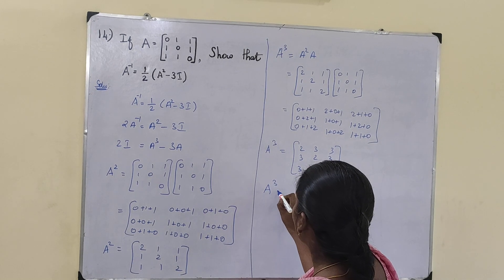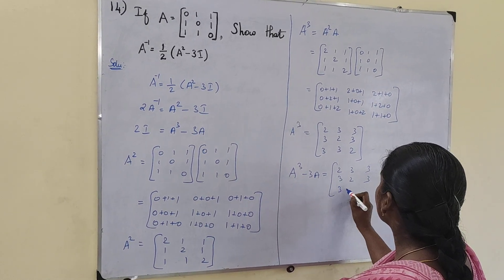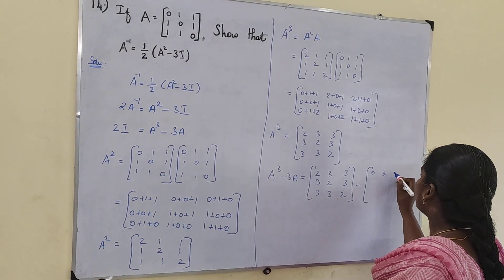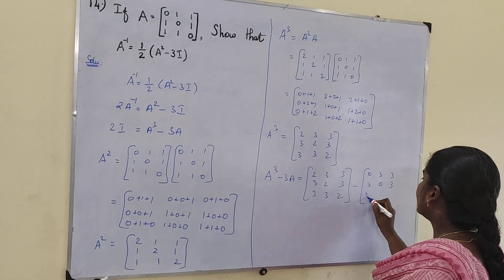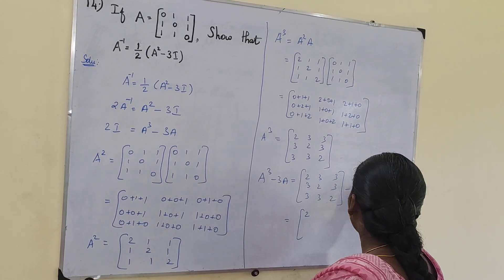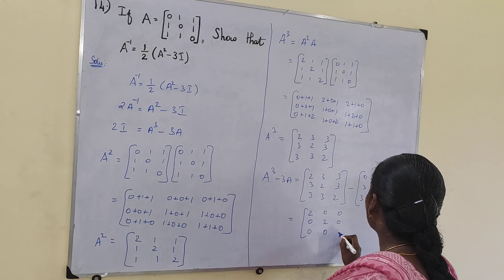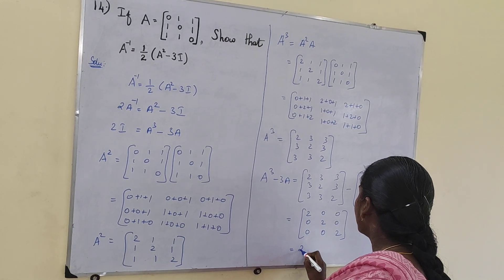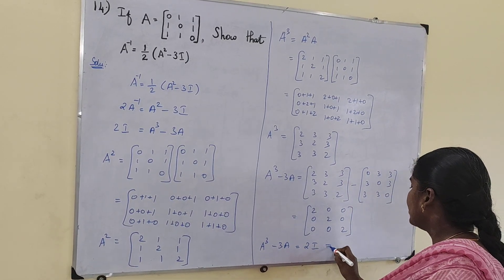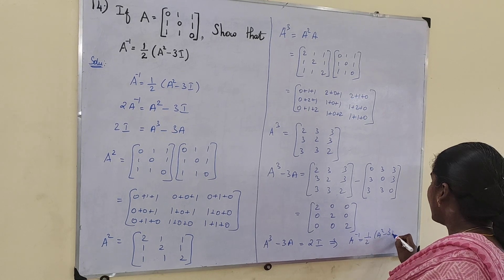Next we compute A cube minus 3A. A cube is [2,3,3; 3,2,3; 3,3,2] minus 3 times A which gives [0,3,3; 3,0,3; 3,3,0]. Subtracting: 2-0=2, 3-3=0, 3-3=0; 3-3=0, 2-0=2, 3-3=0; 3-3=0, 3-3=0, 2-0=2. So A cube minus 3A equals 2I, which proves A inverse equals half into A square minus 3I. Hence proved.